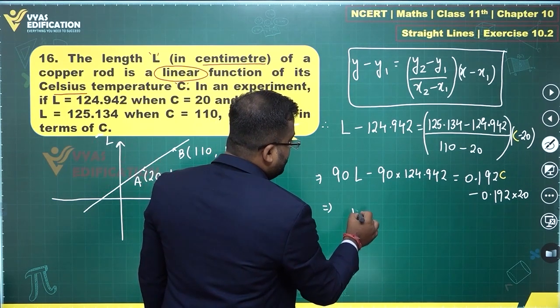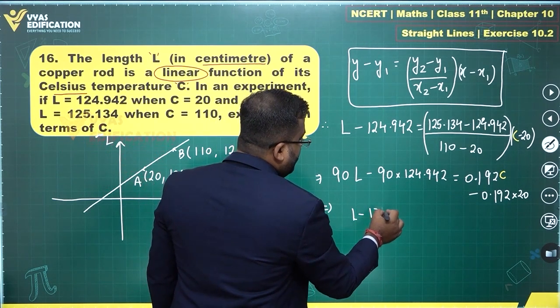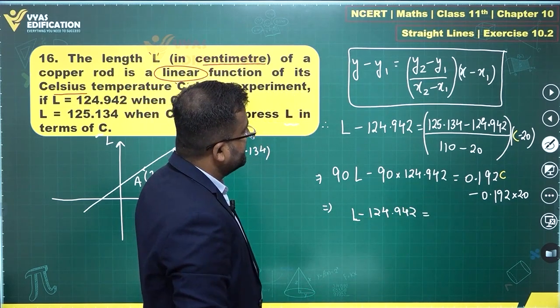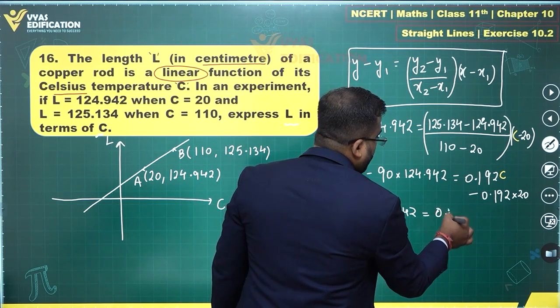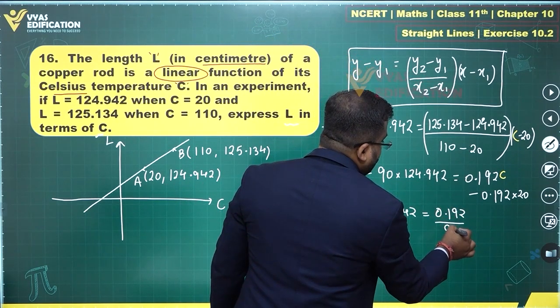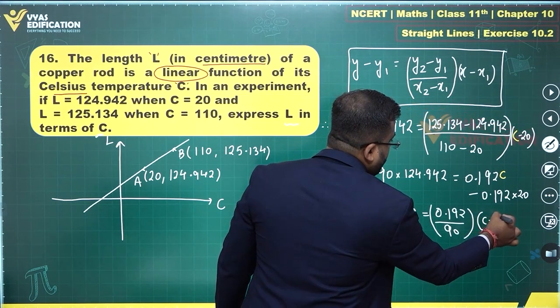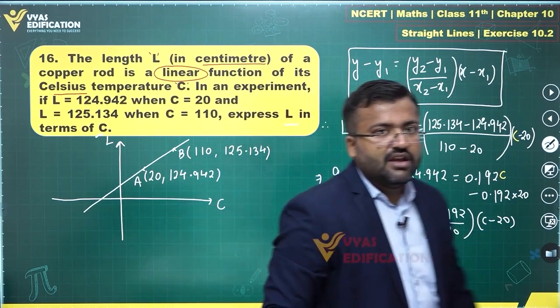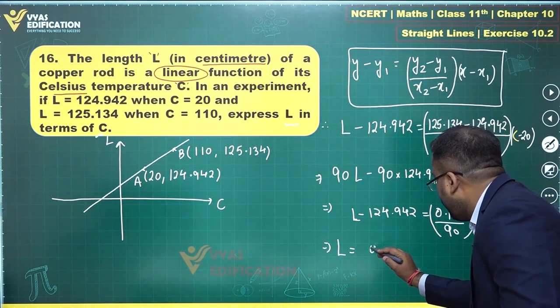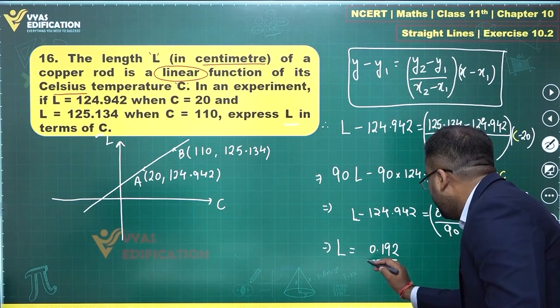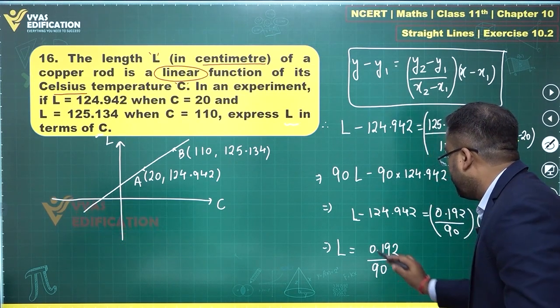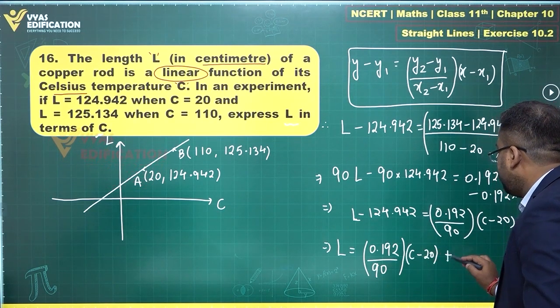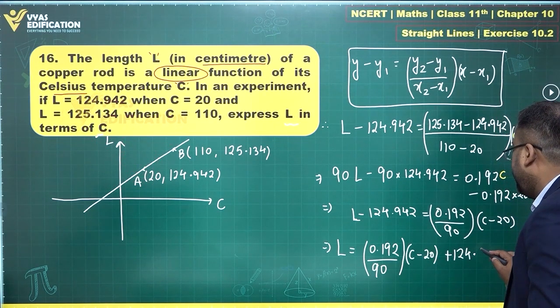So you have L minus 124.942. Let's rewrite it as this is equal to 90 times this. So 90 will come in the denominator: 0.192 upon 90 times C minus 20. Let's write it as this and this tells me L equals—pretty simple. L will be equal to in terms of C. This will be equal to 0.192 upon 90 times C minus 20 plus 124.942.